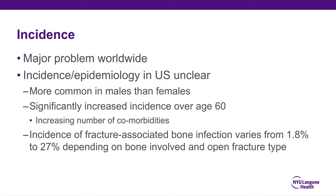Osteomyelitis would be the next big problem. The incidence of osteomyelitis is a major problem worldwide. In the U.S., its epidemiology is unclear and difficult to report on. It's more common in males than females, probably because trauma is more common in males. There's a significantly increased incidence over age 60, partly because of the increasing number of comorbidities in these patients. The incidence of fracture-associated bone infection varies from 1.8% to 27% depending on the bone involved and, with open fractures, the type of open fracture.